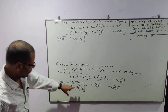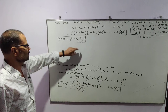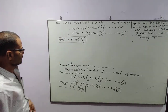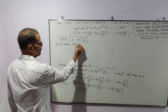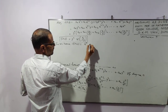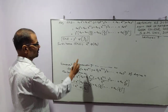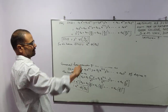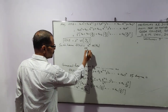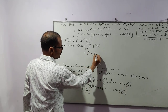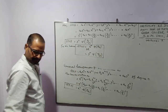So f(x,y) is equal to xⁿ·φ(y/x), or equivalently yⁿ·ψ(x/y). This is a very important result.